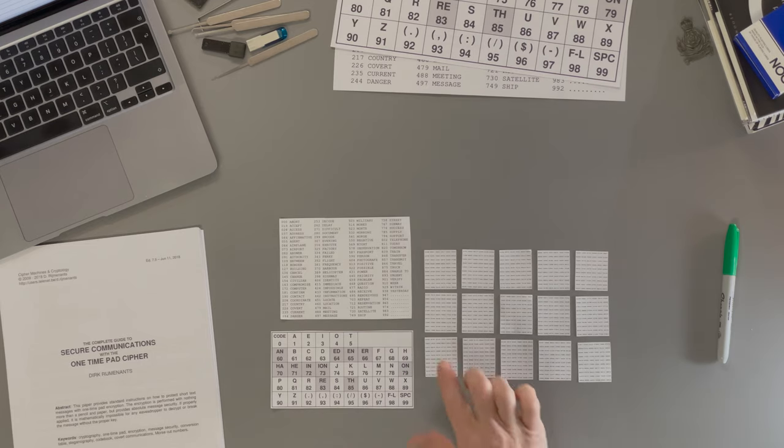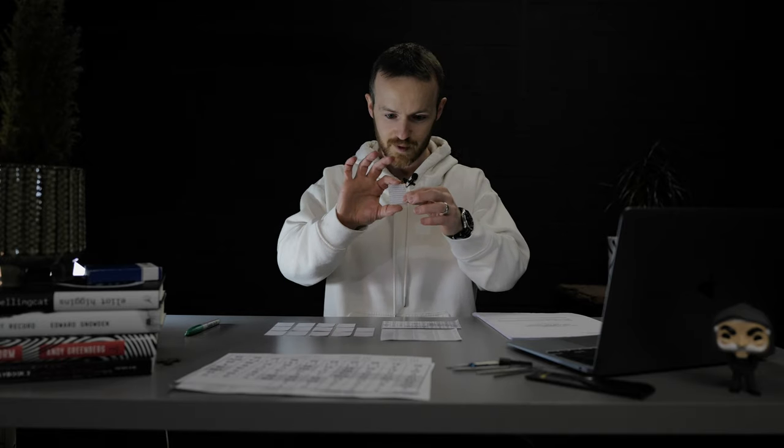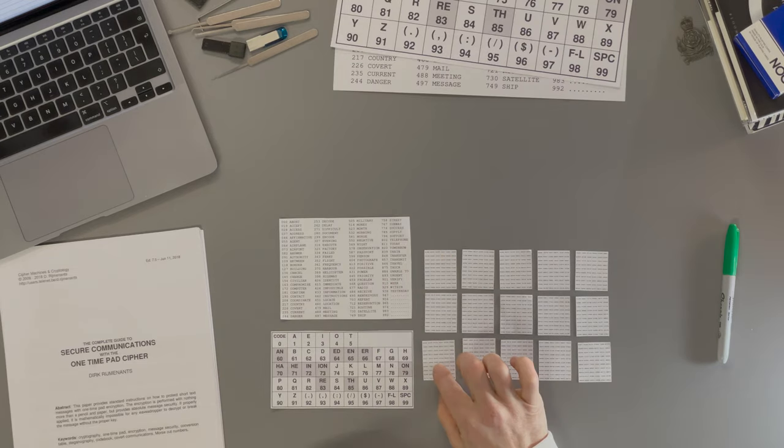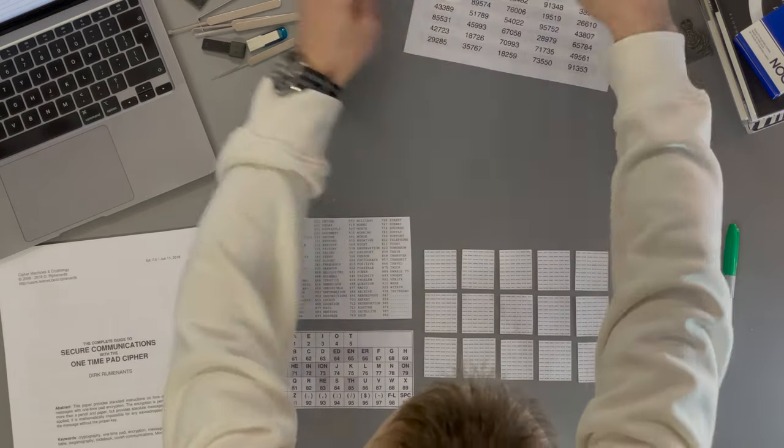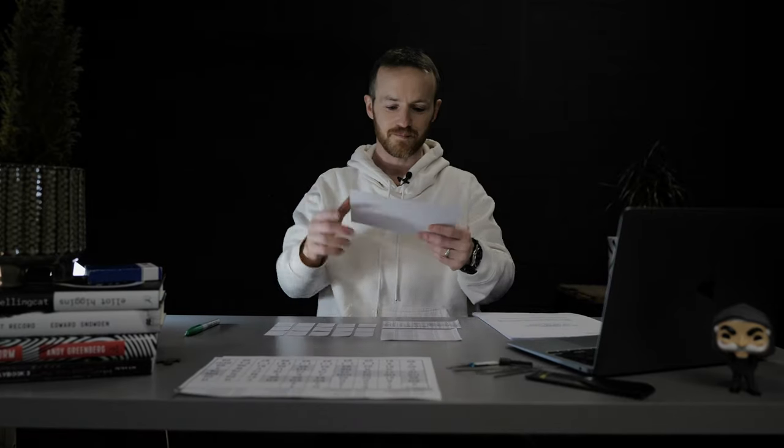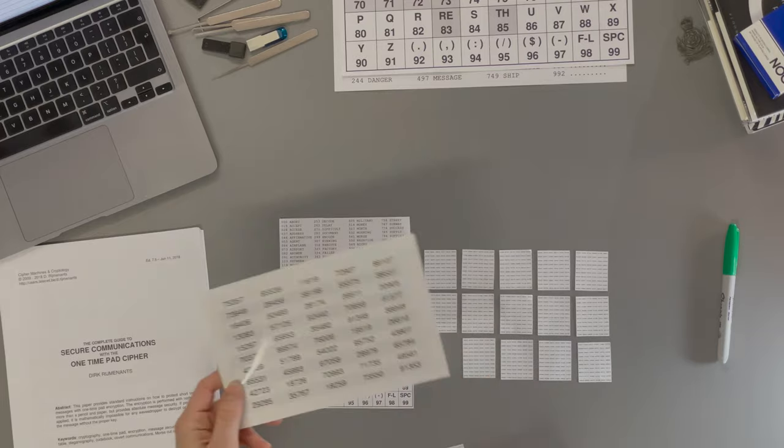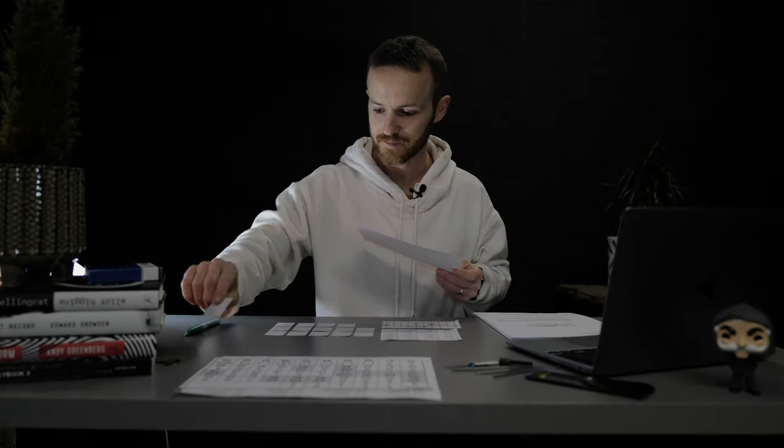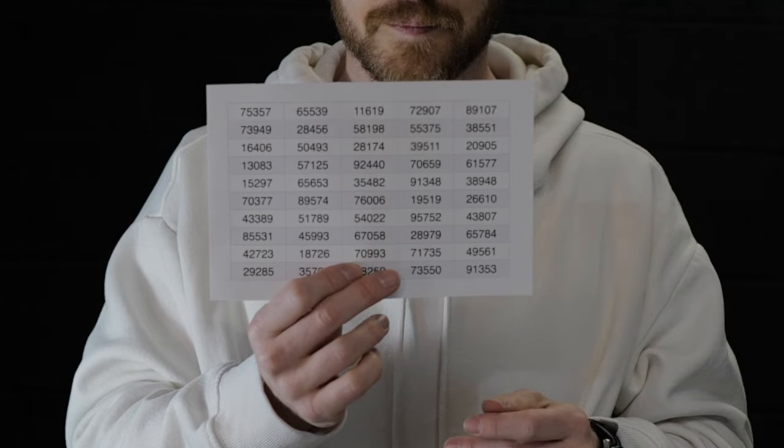You get this tiny little piece of paper. Here we go, here it is. This is just a blown up version of one of these, a little bit easier. This is your key, far too big to be used in reality, but this is what you're going to use to encrypt your message.